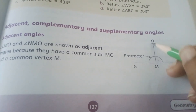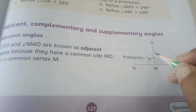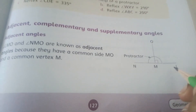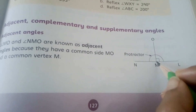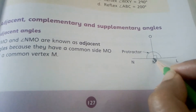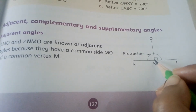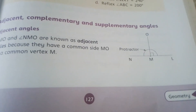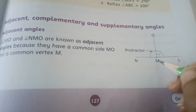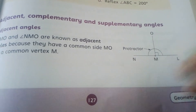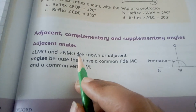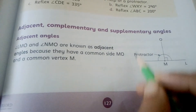The vertex is also common. In angle LMO, the vertex is M, and in angle NMO, the vertex is also M. So the common arm and the common vertex are both present, which is why these two angles are called adjacent angles.